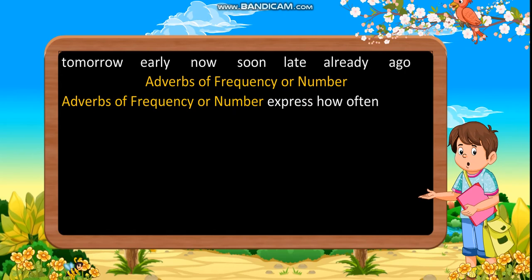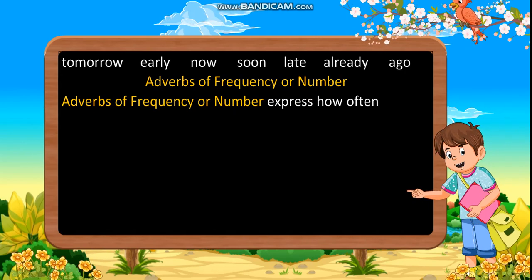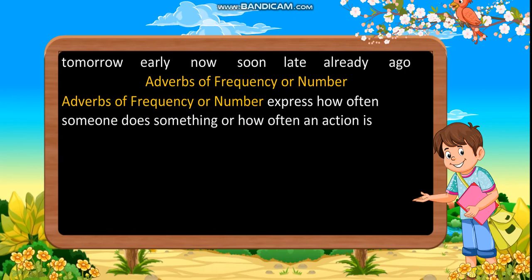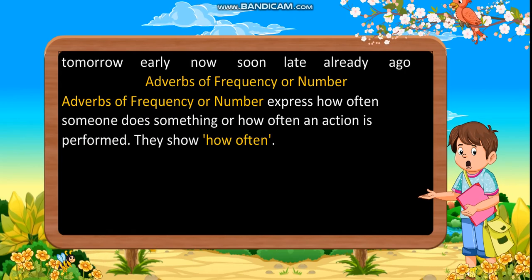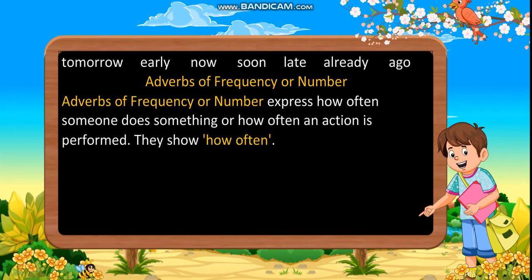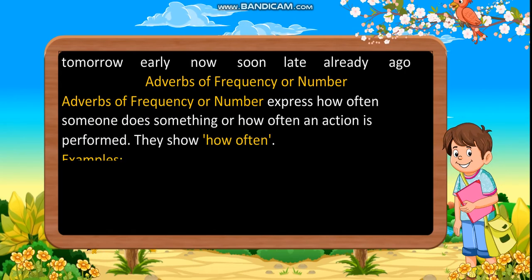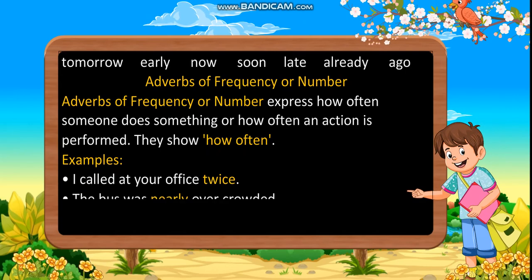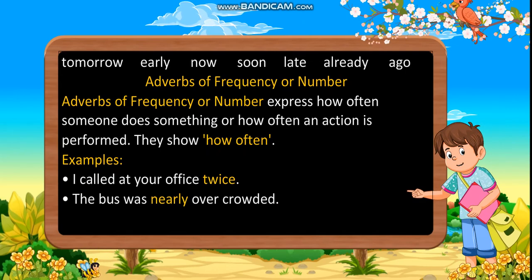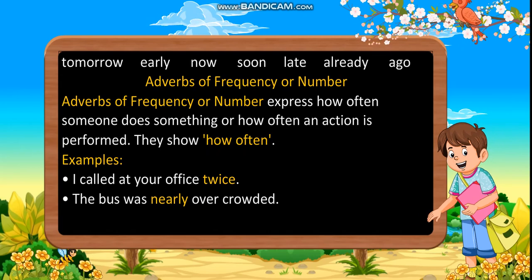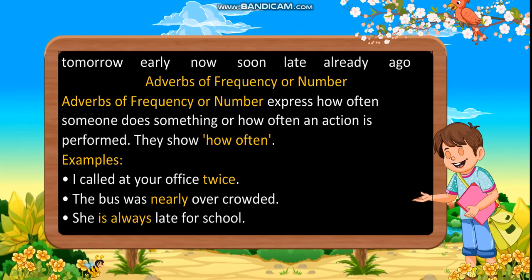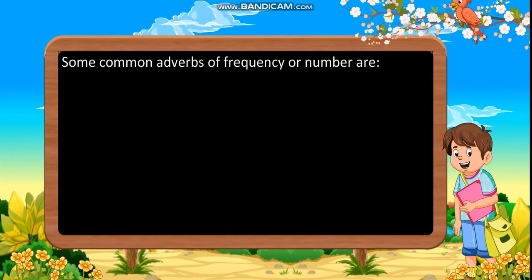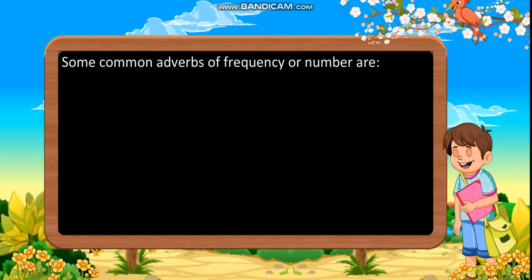Adverbs of frequency or number express how often someone does something or how often an action is performed. They show how often. Examples: I called at your office twice. The bus was nearly overcrowded. She is always late for school.